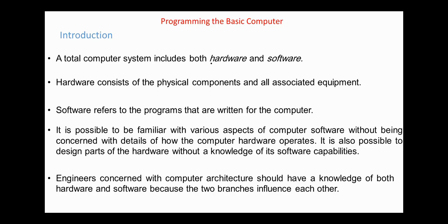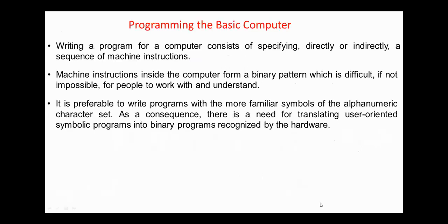A total computer system includes both hardware and software. Hardware consists of physical components and all associated equipment. Software refers to the programs that are written for the computer. It's possible to write computer programs without being concerned with the details of how the computer hardware operates. Engineers concerned with computer architecture should have a knowledge of both hardware and software because the two branches influence each other. Writing a program for a computer consists of specifying, directly or indirectly, a sequence of machine instructions.